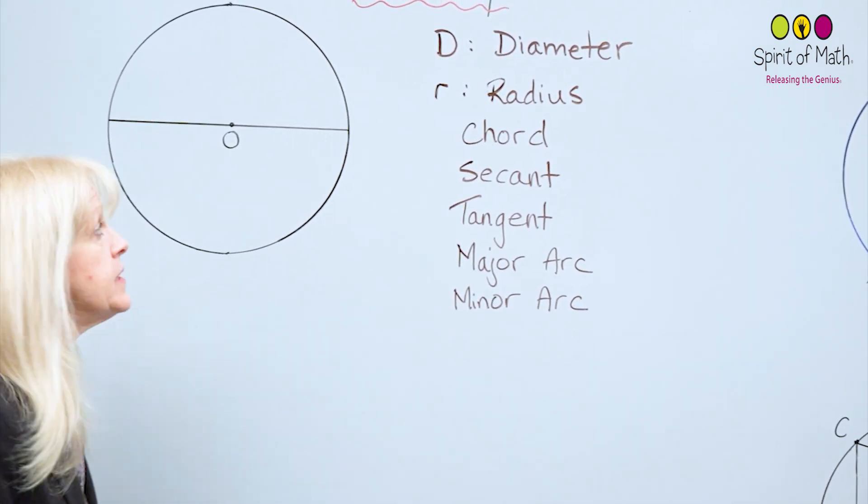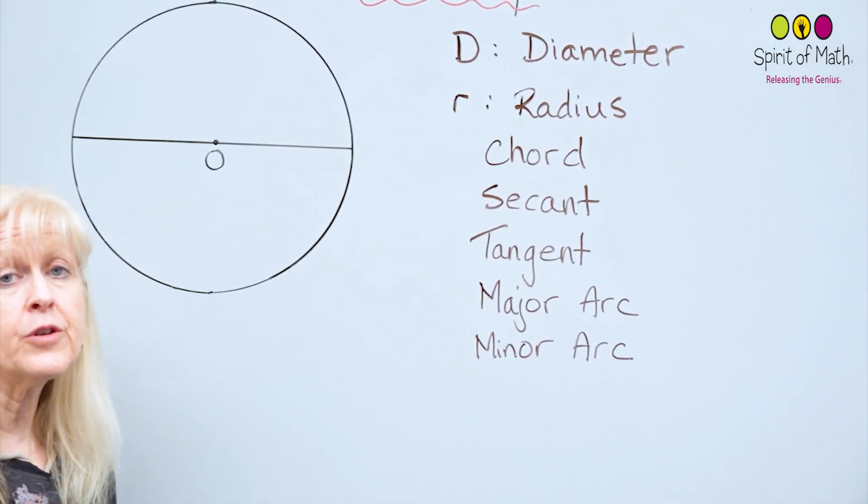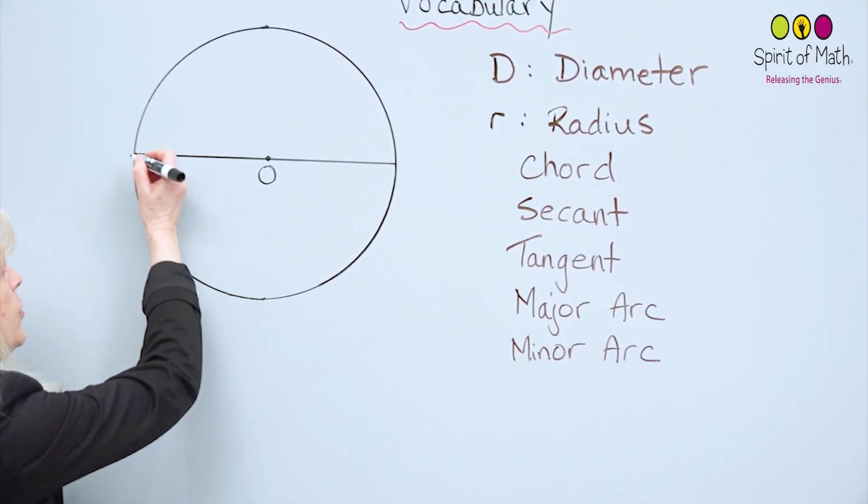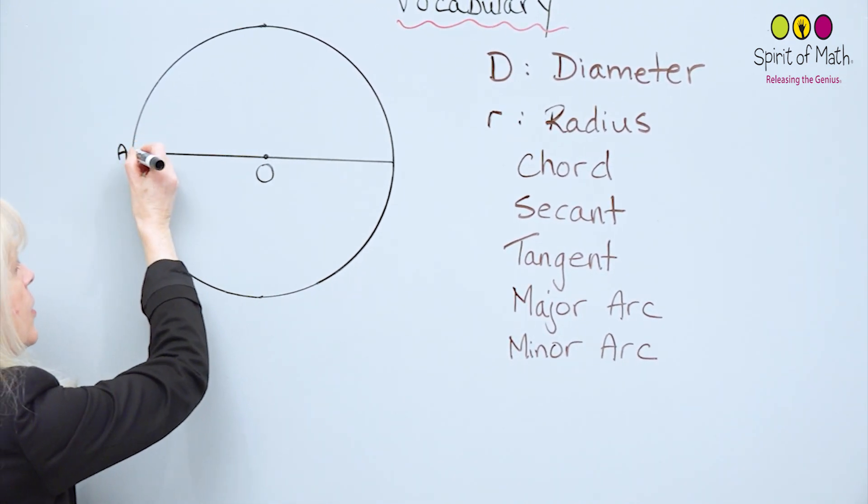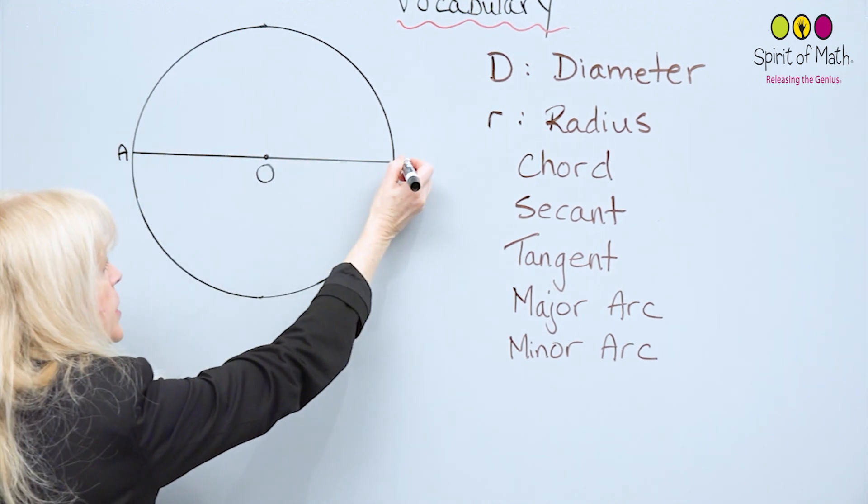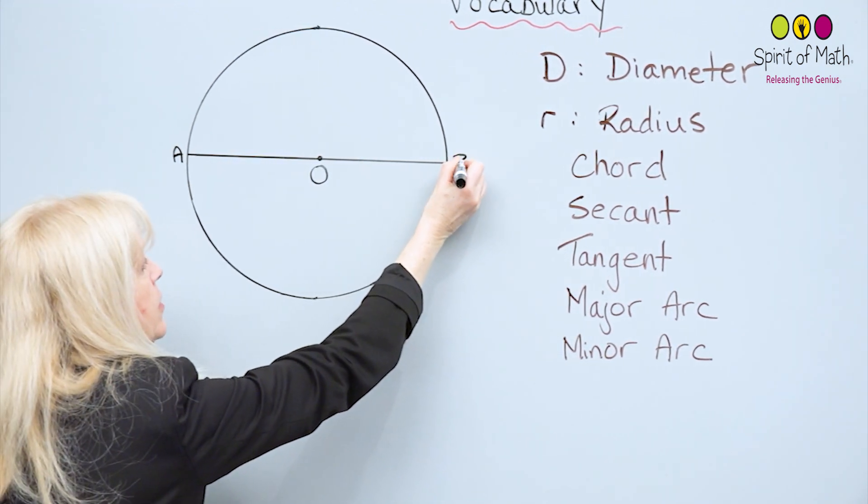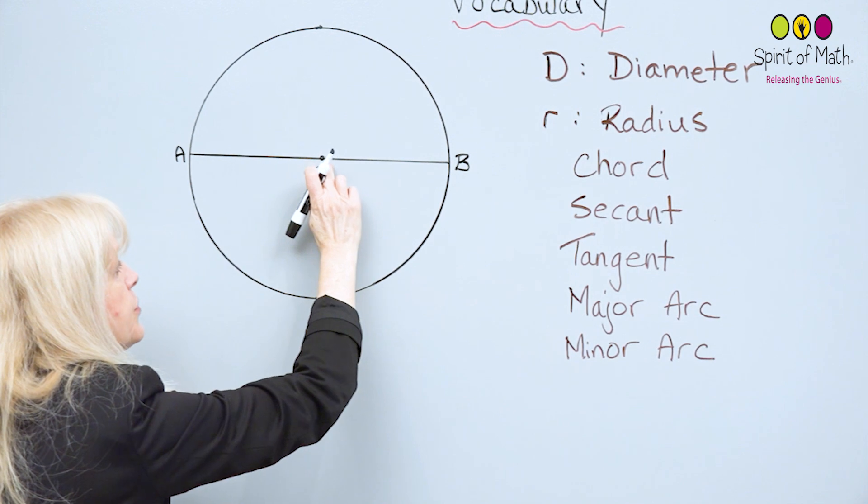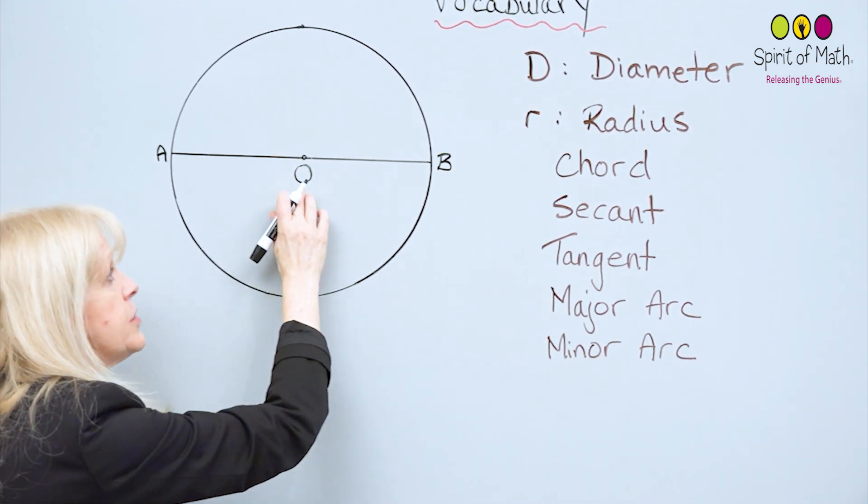The first one is diameter, and it's usually referred to as a capital D. The diameter would be a line that goes from one side of the circle to the other side, so let's call this AB, and it goes through the center. It's important that it does go through the center.